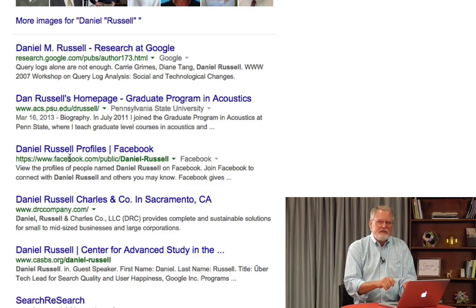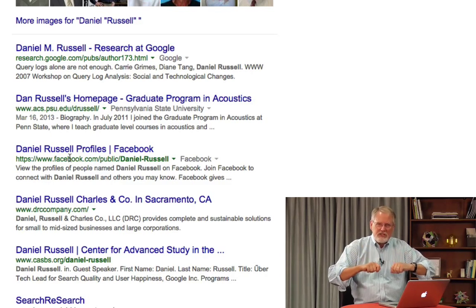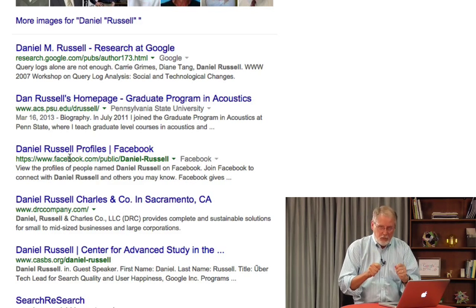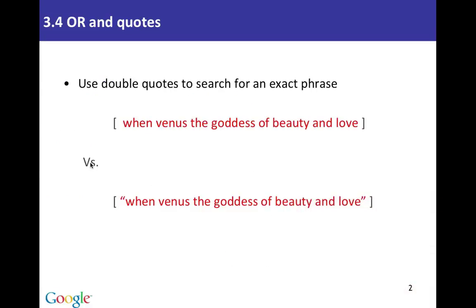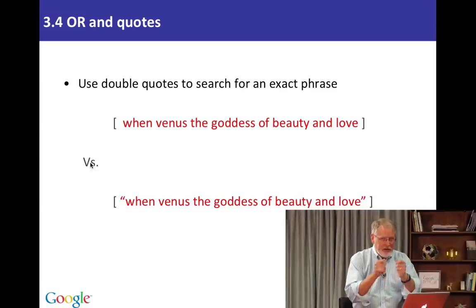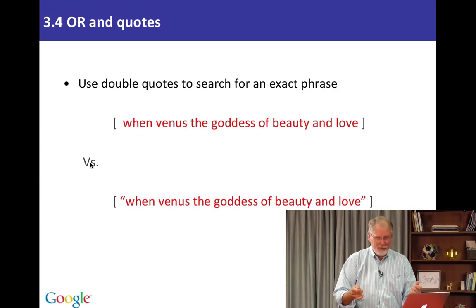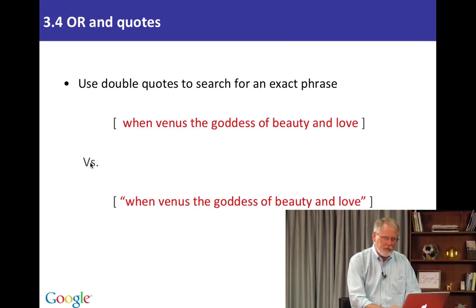So you see what double quotes do: it can be used to do a phrase search, or it can be used to give you exact spelling of a single word — two different uses for the same operator. When you use double quotes as a phrase, you get exactly that phrase. When you use double quotes around a single term, you get exactly that term. Be careful, because if you misspell that word, you're not going to get the results you expect — you have to know that you're searching for exactly that word or phrase.